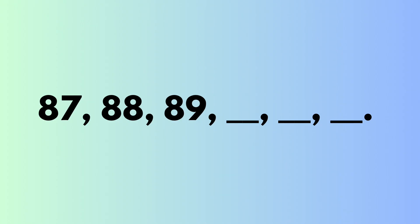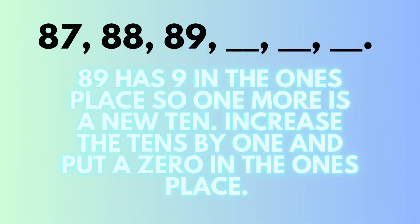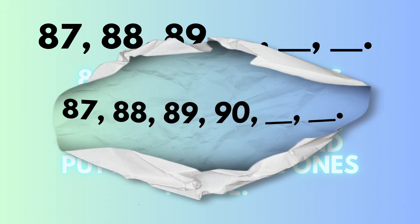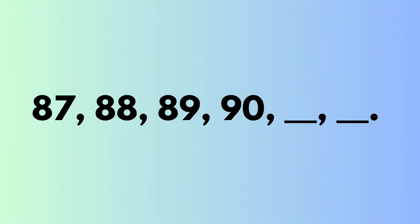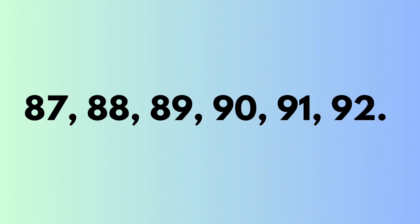Let's look at another example: 87, 88, 89. What comes next? 89 has a 9 in the 1's place, so 1 more will make a new 10. We increase the 10's place by 1 and put a 0 in the 1's place, giving us 90. Then comes 91, and we finish up with 92.